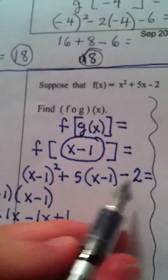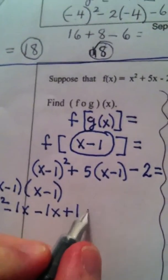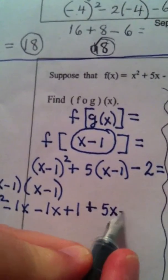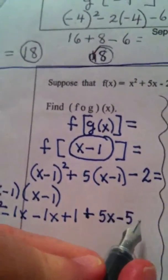And then we pick up the rest of the problem. We distribute the 5. That gives me 5x minus 5 and the negative 2.